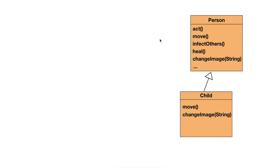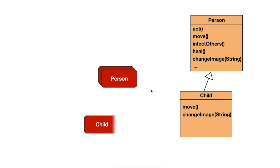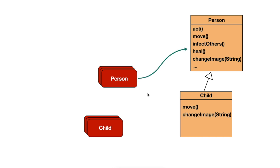Then at runtime, what happens is that we have a whole number of objects. We have a whole number of Person objects — a couple of hundred of them — and we also have a whole number of Child objects. So the Greenfoot runtime, when the simulation runs, has a collection of Person and Child objects all mixed together in the world. Now one important thing to understand in Java is that every object has a reference to its class, called the instance-of reference. So every Person object knows its own class and holds a reference to it. The same is true for Child objects.